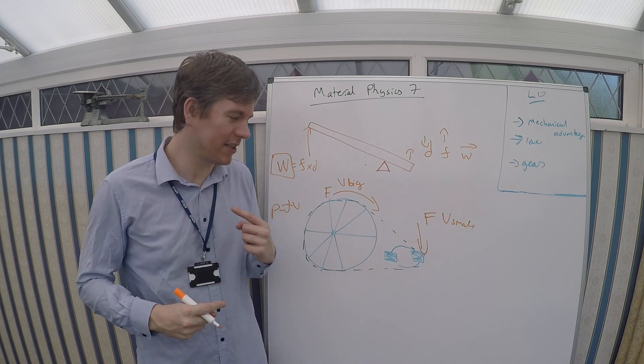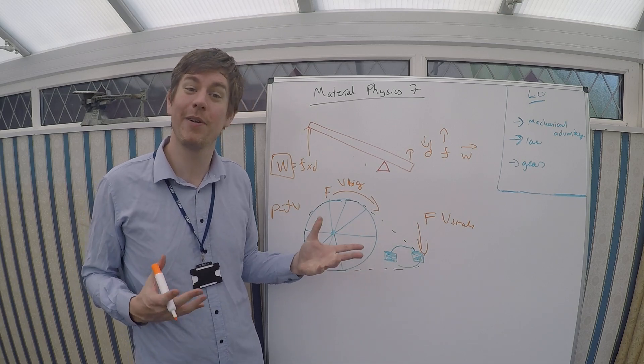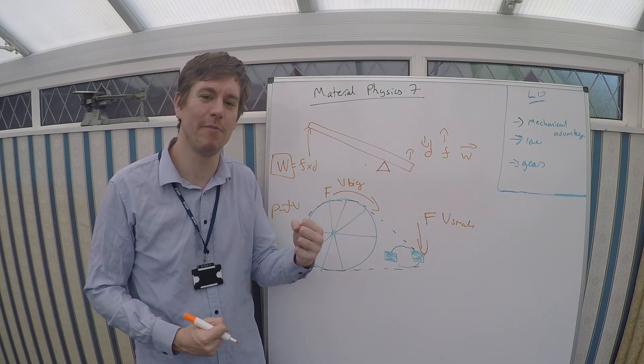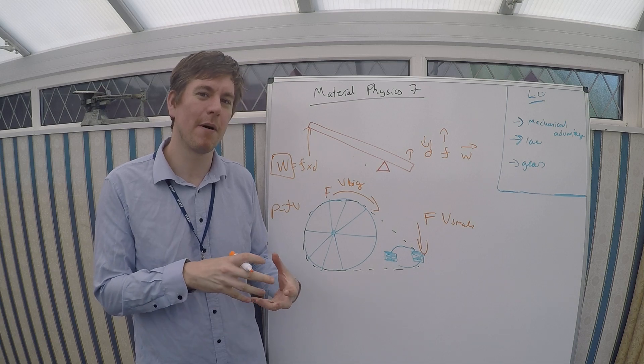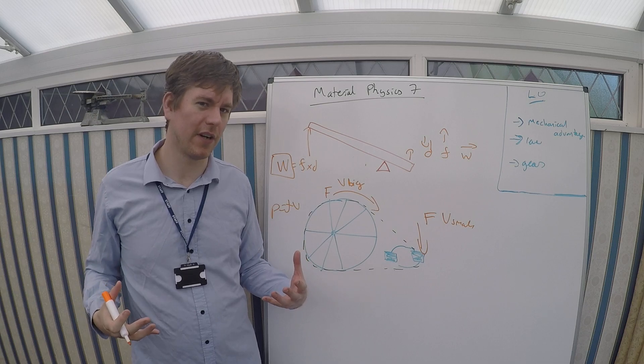Because if you think about it, if you had to pedal at the same speed as the back wheel was going around, if it was just a one-to-one ratio, it would never work. You'd never get anywhere, because you could only move as fast as your legs could pump you. But by using gears and using this mechanical advantage, we can go much faster.